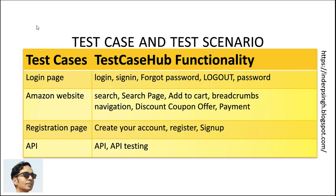In Test Case Hub, if I am searching only for login test cases, there are different search terms I can use. I have done a partial mapping for the login page: I can search for 'login,' 'sign in,' 'forgot password,' 'logout,' and 'password.' Using all these terms will give me more test cases for the login page.